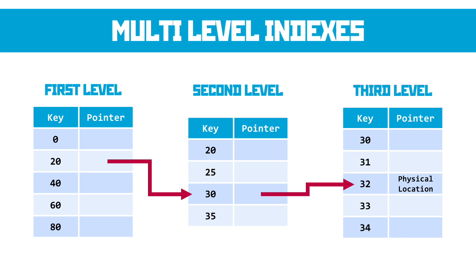In this case, again, I'm still looking for 32, so I'll find the closest one that doesn't go over it. That's 30. That takes me to a third-level index that gives me the precise physical location I can go and get it. So finding the number 32 doesn't take me 32 attempts. It takes me three.